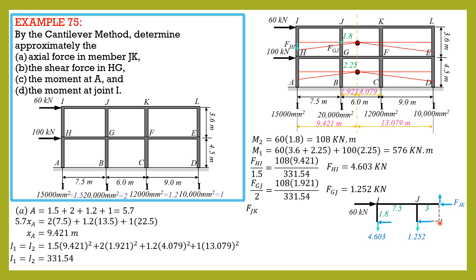So summation moment about point 1 equals 0. So fgk times 1.8 counterclockwise positive here, then plus 4.603 times 7.5 plus 3 is 10.5, plus 1.252 times 3, where 3 is half of 6 and distance 7.5 that's 7.5, then equals 60 times 1.8. So from there we can solve for fgk. It is positive so it's correct, it is compression 31.06 kilonewtons.